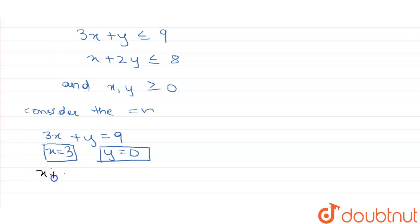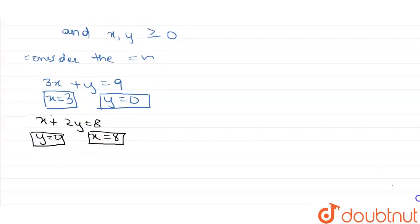Then x plus 2y is equal to - if we put y equal to 0, x will be equal to 8. This is an important point. Now the solution set of the system - we can determine the maximum value of Z by evaluating the value of Z at the four points shown.